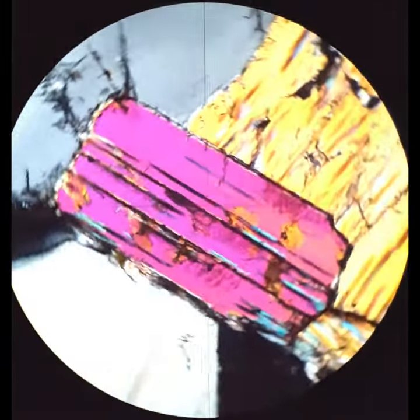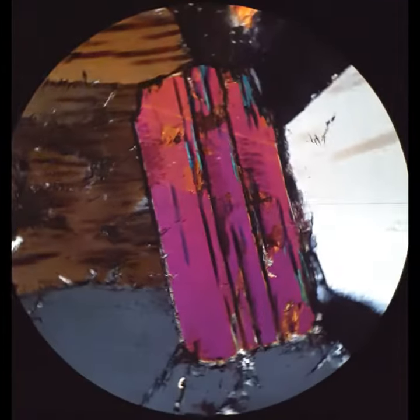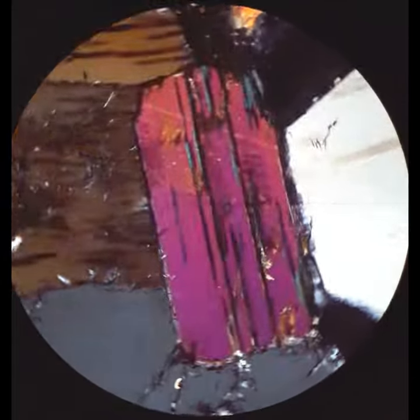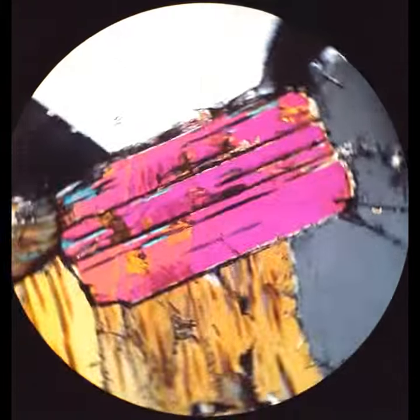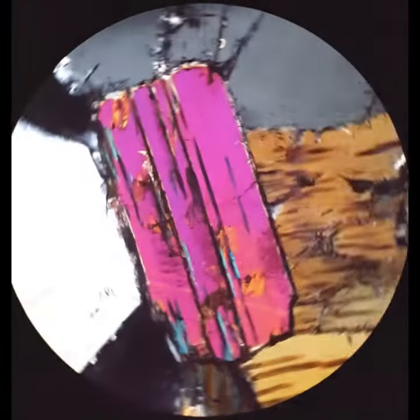When you cross the polars, it has low to moderate interference colors, but it does not have bird's eye extinction. That's what is particularly distinctive about it in terms of comparisons to other micas.